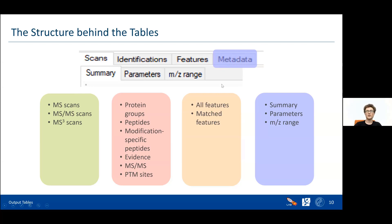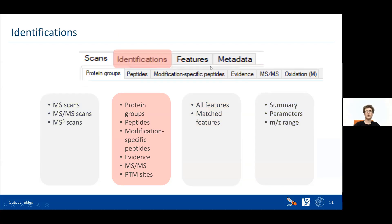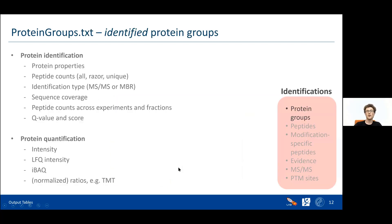Now we're going to go through one class after another to see what information is in there. We'll start with the identifications — the stuff that is most interesting for people doing biological research. We start with the table called protein groups, which is the file proteinGroups.txt.